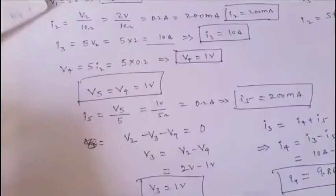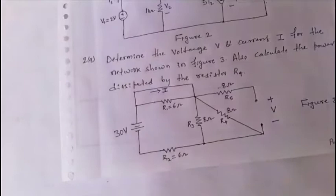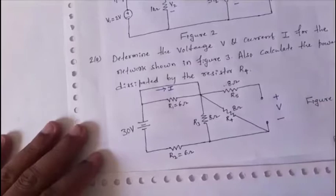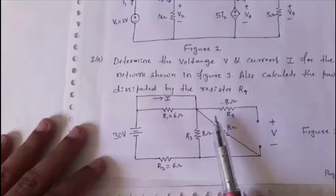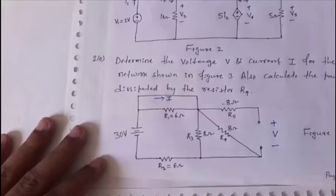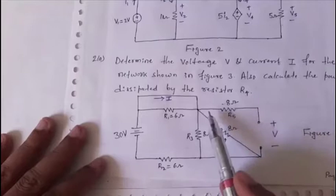Problem 3: determine voltage v, current i, and power dissipated. Key concepts: r5 is open circuit — no current flows through it, so it has no effect. Remember, resistance only matters when current flows through it; an open circuit contributes no voltage drop.